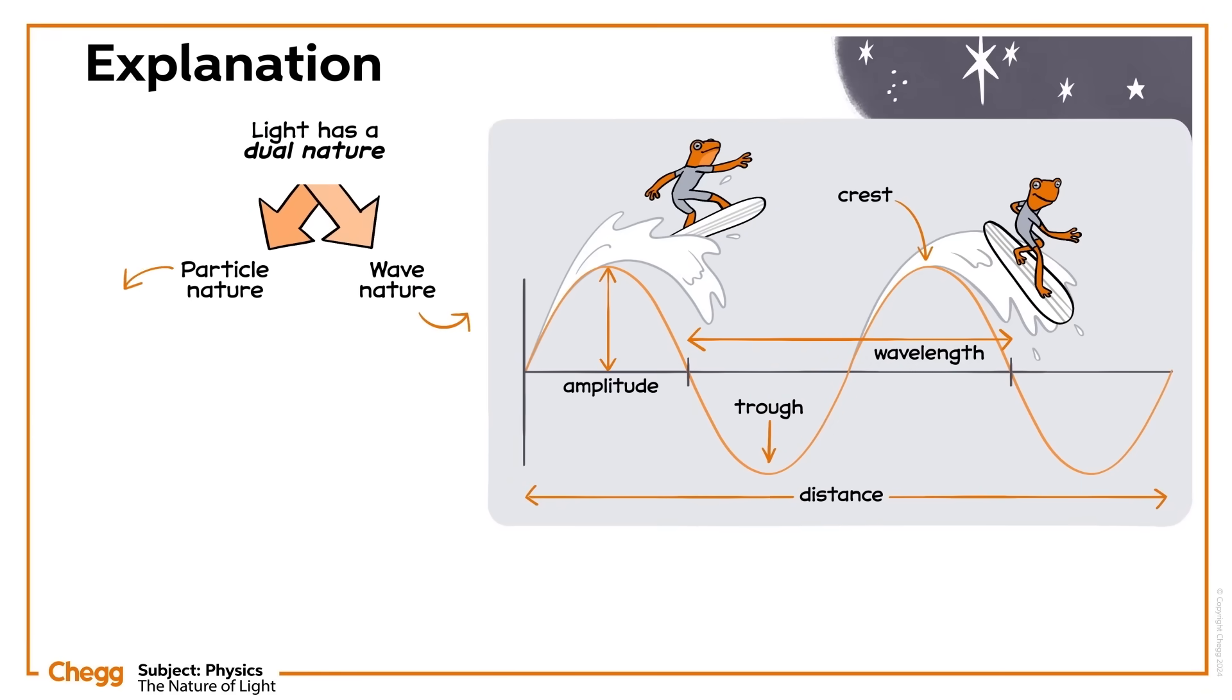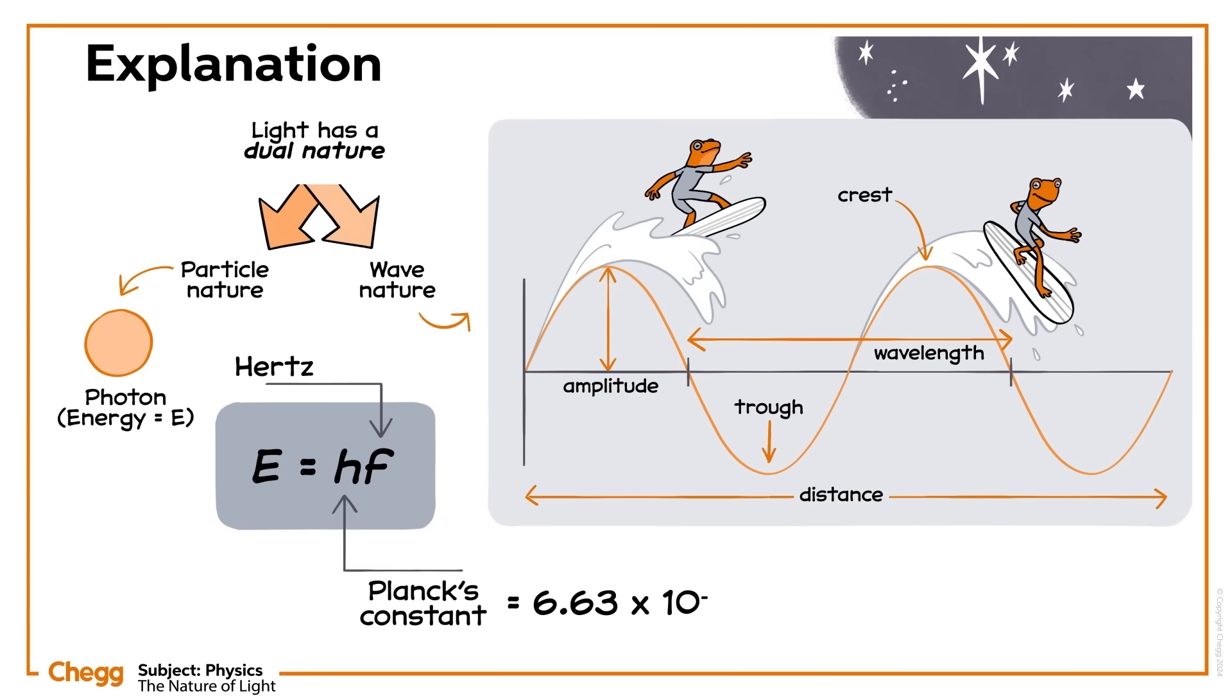Now let's turn to the particle nature of light. Light behaves like a stream of particles. We call these particles photons, and each has an energy, e. The amount of energy depends on the frequency of light. Energy, e, in joules, is equal to the frequency in 10 to the 14 hertz multiplied by Planck's constant, which has the value 6.63 times 10 to the minus 34 joule seconds. E equals hf.